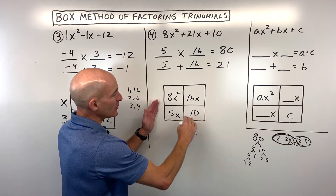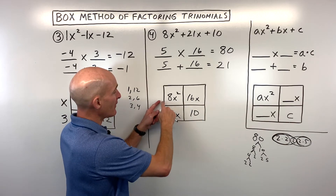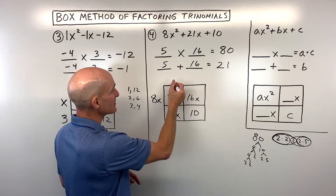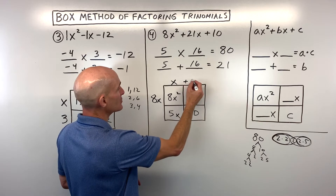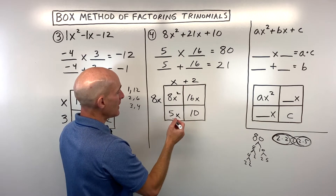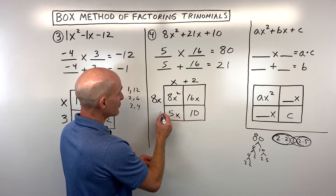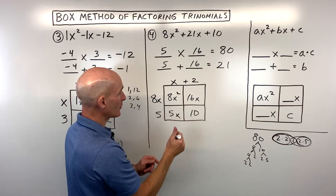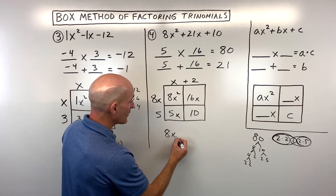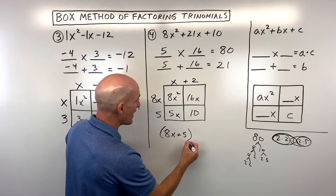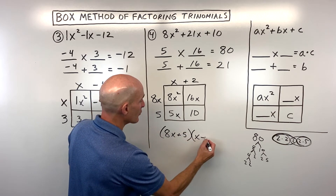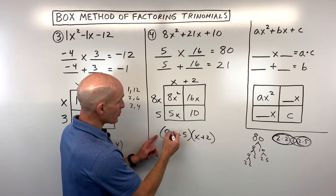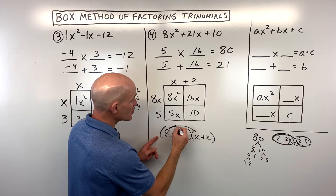Looking horizontally, we factor out the greatest common factor. For the top row, we can factor out 8x, leaving us with x and 2. For the bottom row, we factor out 5. Double-checking: 5 times x is 5x, and 5 times 2 is 10. Our final result is 8x plus 5 times the quantity x plus 2. You can check your work by foiling or distributing twice.